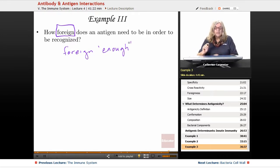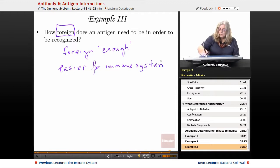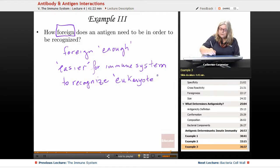The other thing we know is that it's easier - it's easier, let me make sure that's spelled - easier for the immune system. Let's put that in quotes: easier for the immune system to recognize a eukaryote.